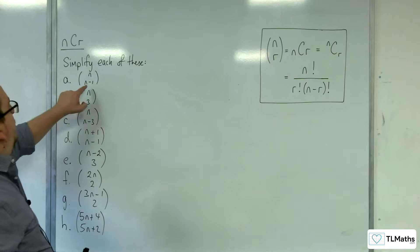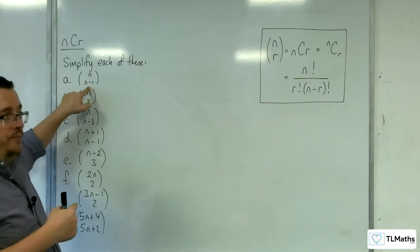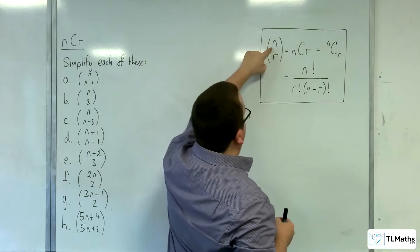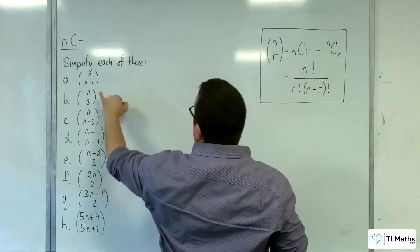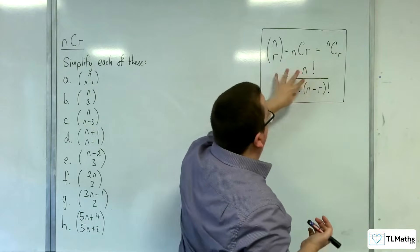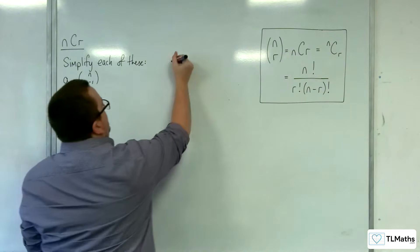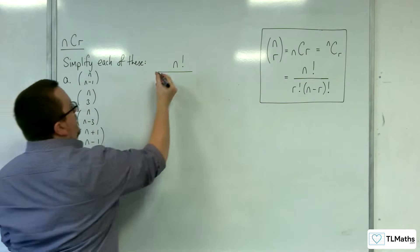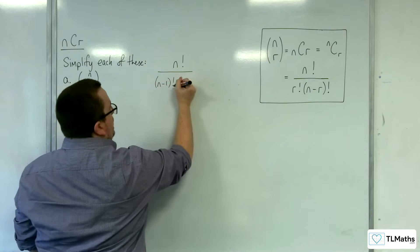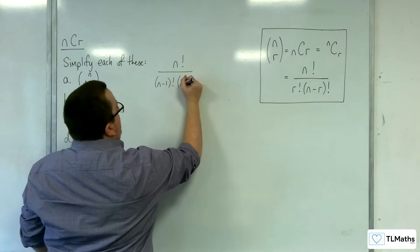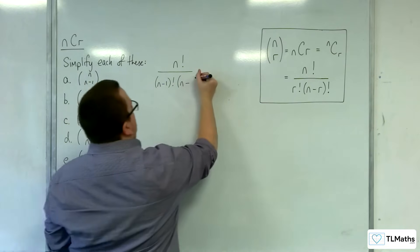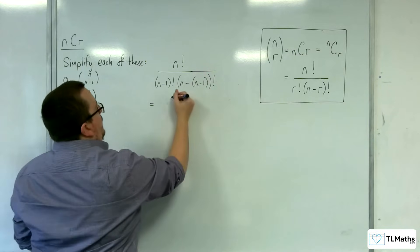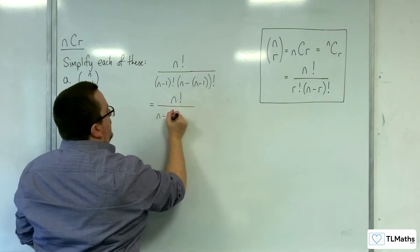Let's take a look at the first one: N choose N-1. The idea is that we replace N with N — so that's not going to change — and N-1 becomes the R. So what we would have is N factorial in the numerator; the R's become N-1's, giving us N-1 factorial times N take away R, which is also N-1 factorial. So we've got N factorial over N-1 factorial.